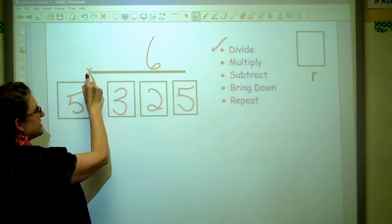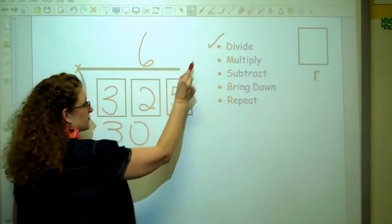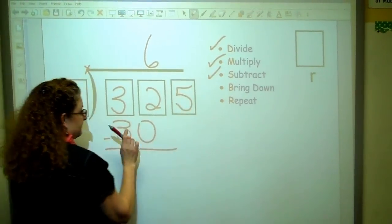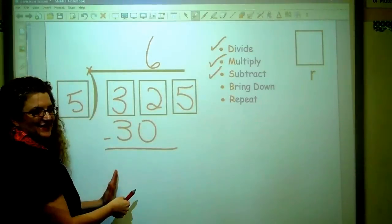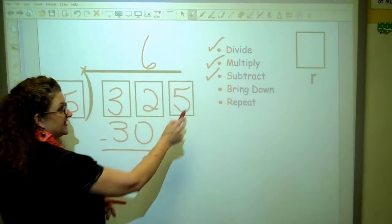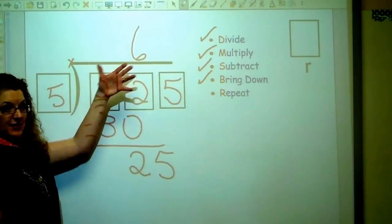And now I'm going to do my multiplication. 6 times 5 is 30. And I check that off. And now I'm subtracting. So if I subtract 30 from 32, I'm going to get a 2. Now, is there something to bring down? Yes, there is. I'm going to bring my 5 down.